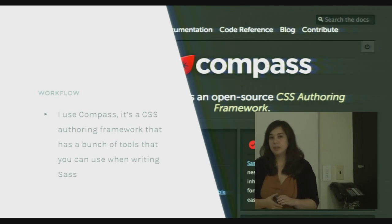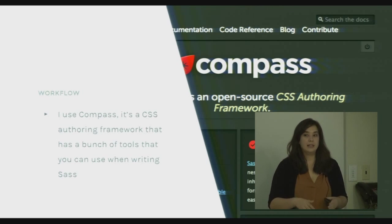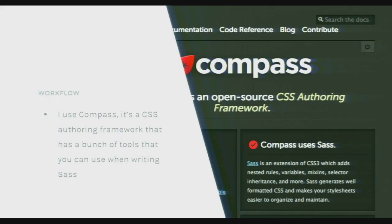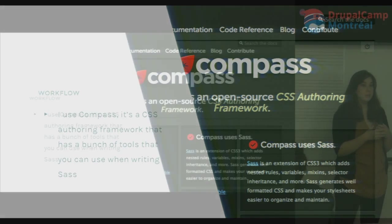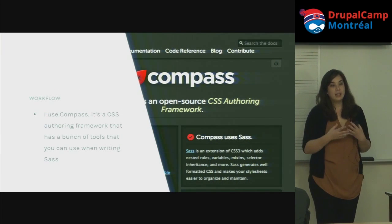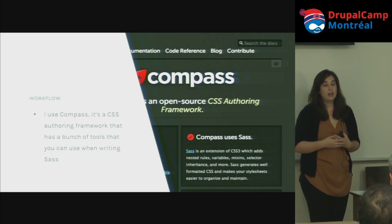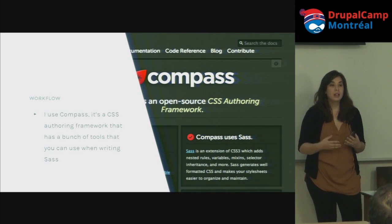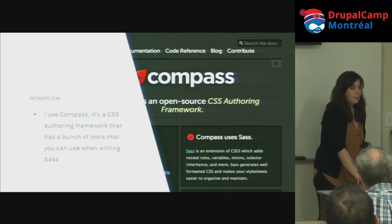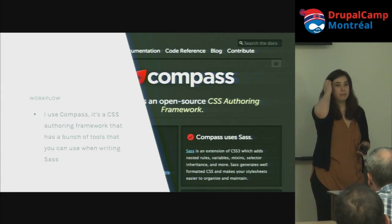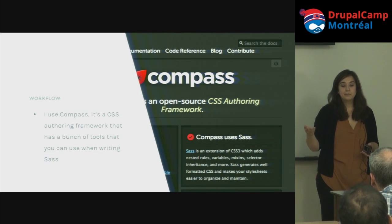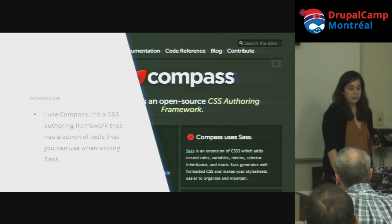I use Compass as a command-line tool regularly, but they also have a GUI application you can download. It's not only a compiler — it also comes with a framework of mixins and other extensions that make writing Sass easier, including things to prefix CSS3 properties that may not work in all browsers yet.